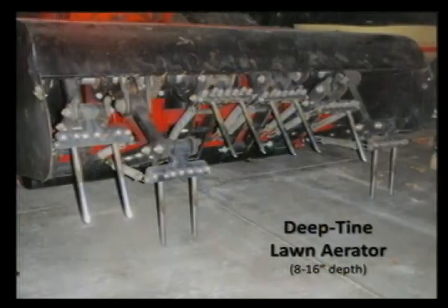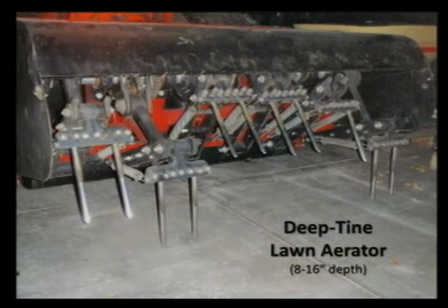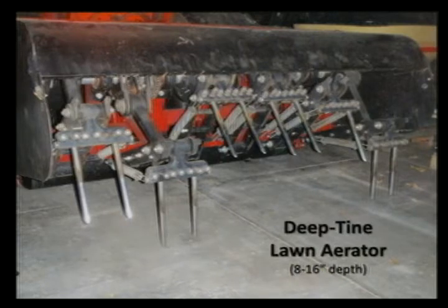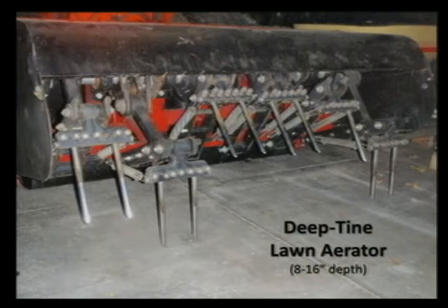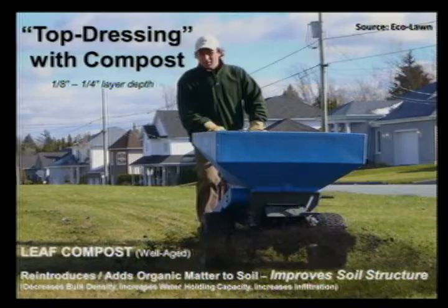There's also a deeper deep-tine lawn aerator, one model produced by Toro, that can go 8 to 16 inches below the surface. This is not typically used in residential situations, but different parks departments use these to break up soil compaction within heavily used grass areas.